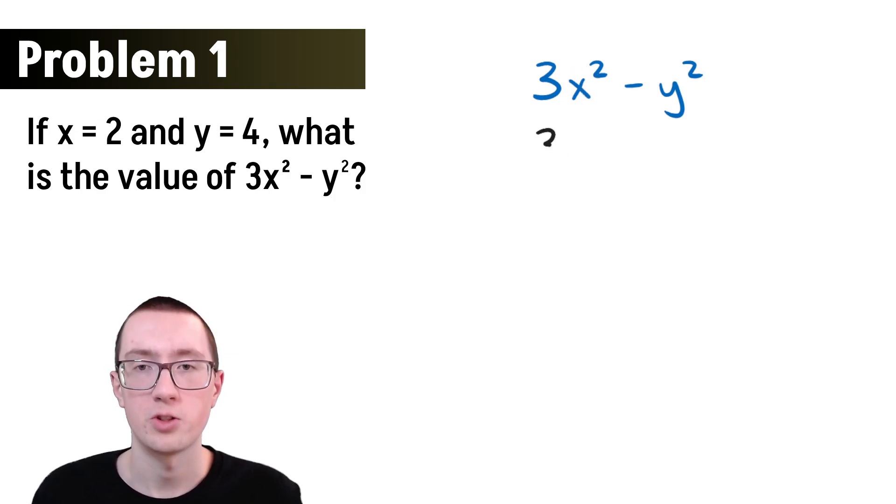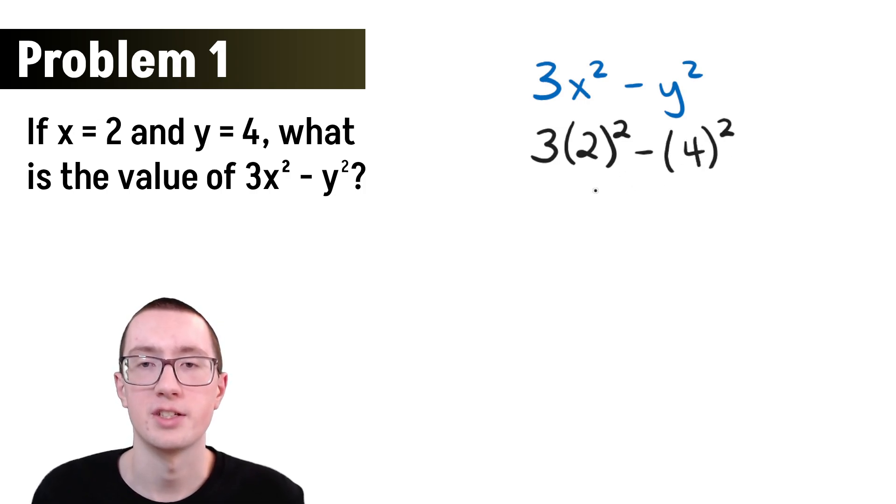We're just going to take these letters, because we can't really do math with letters, right? But it tells us that they're equal to numbers, so we can just replace these letters with those numbers. We were told that x is equal to 2, so we're going to replace x with 2, putting it in parentheses because if you didn't, it would say 32, and it's not 32. And we know that y is 4, so we're going to replace y with 4.